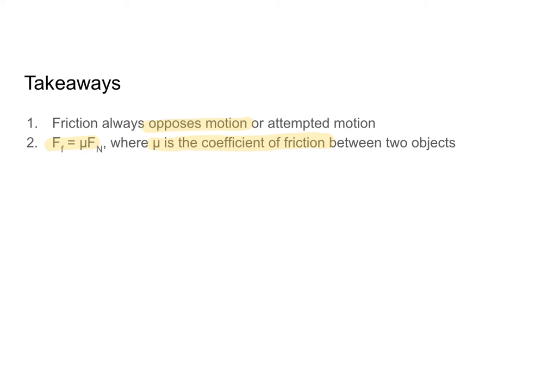Mu is dependent on the material of the objects involved. For example, the coefficient of friction between you and ice is very different from the coefficient of friction between you and sand, which is why you slip on ice and you don't slip on sand. This has been your introduction to friction — go ahead and try solving some problems on your own. Best of luck and happy solving!